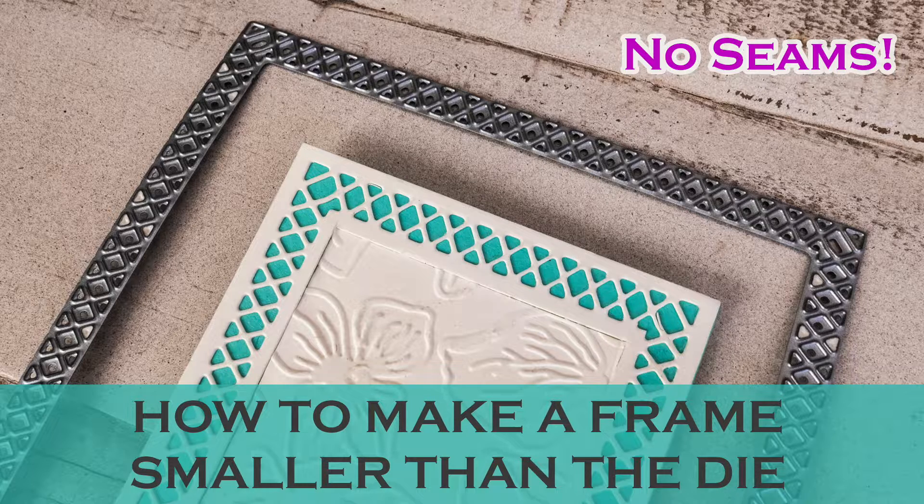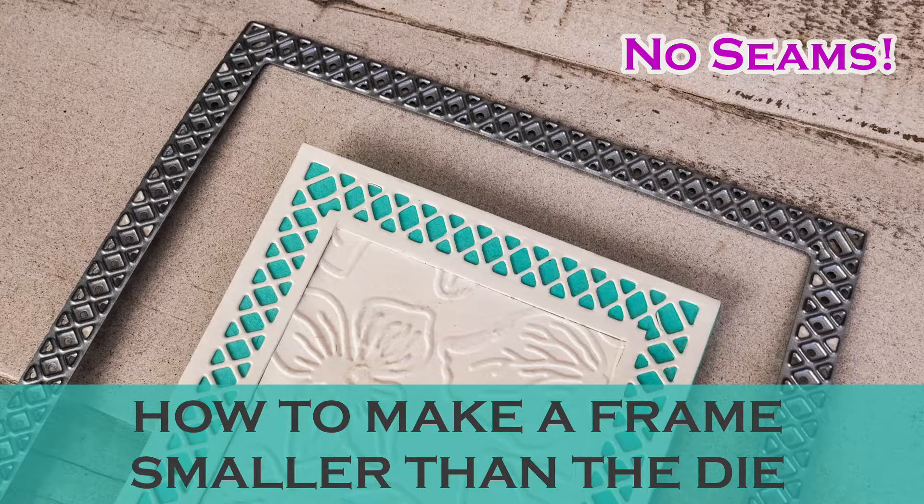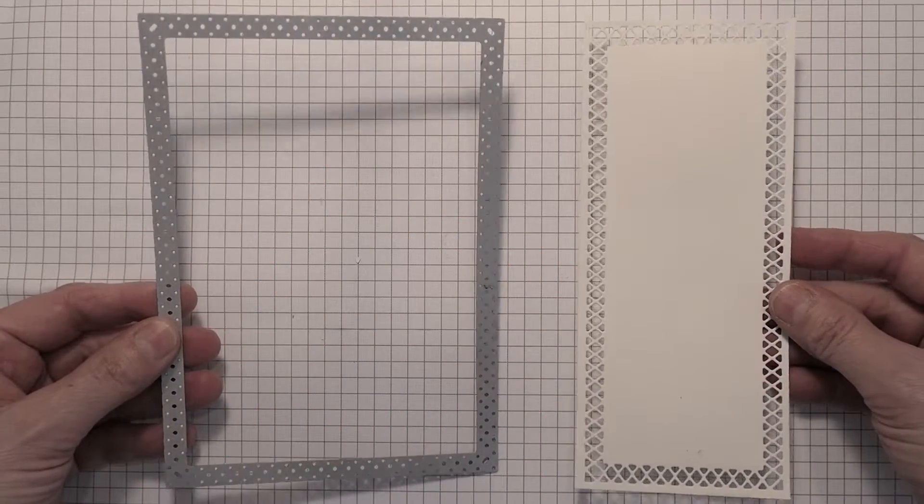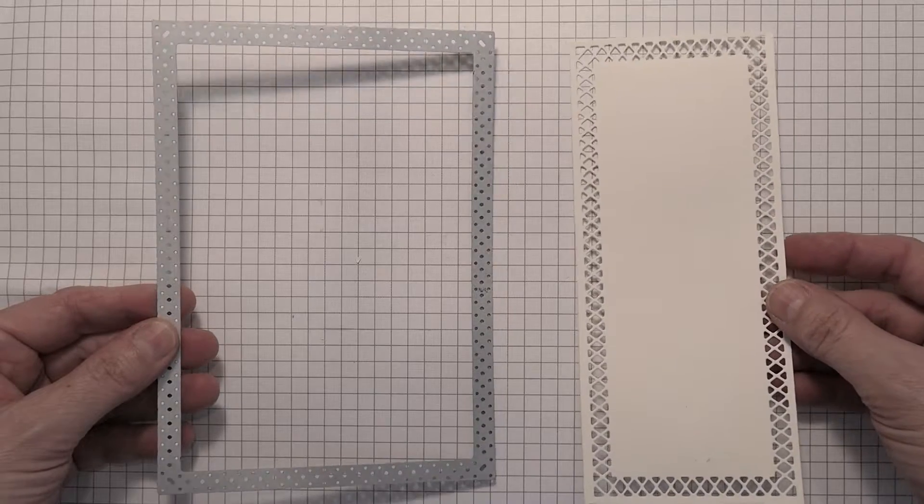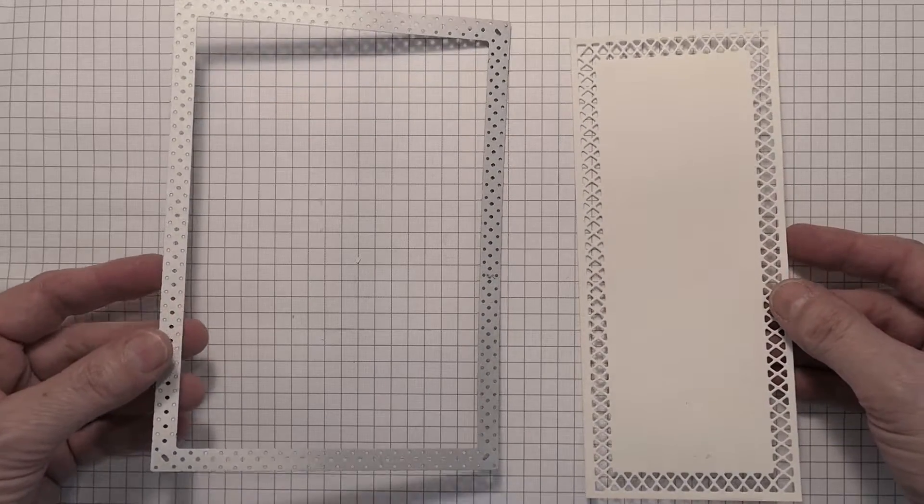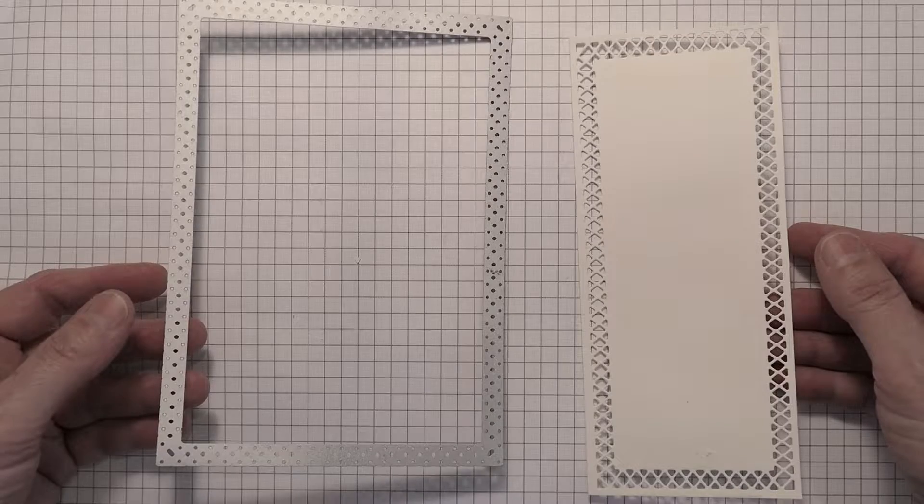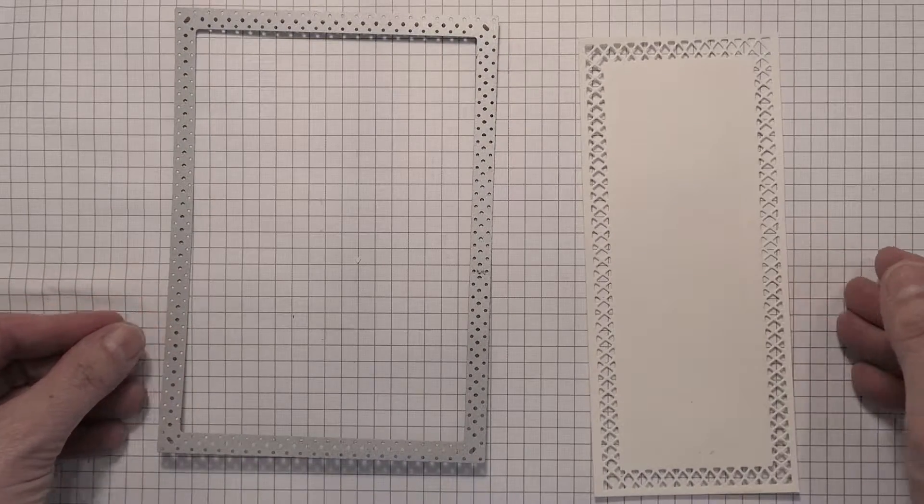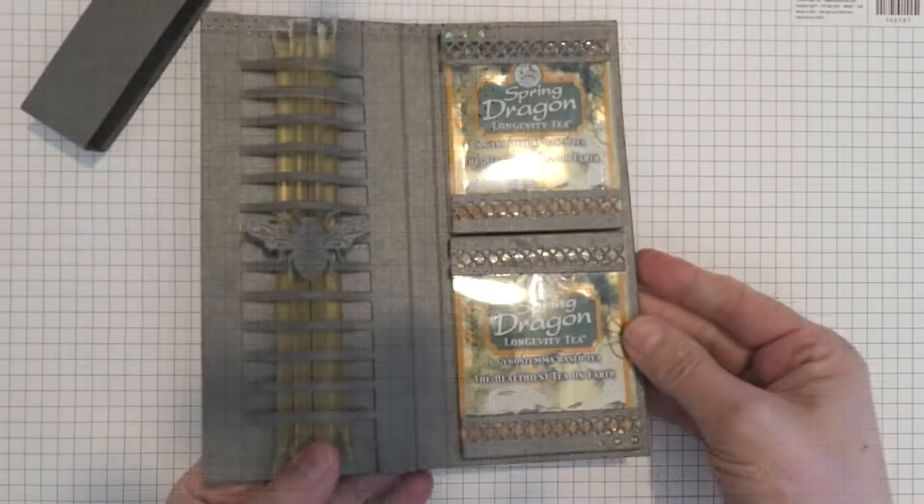I've known about partial die cutting and I've made frames longer in the past. This one was tricky though because it was a 5x7 die that I wanted to make into a 3x7 frame, and with the Big Shot it wouldn't work because it would have been too wide.